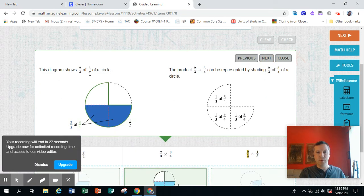This diagram shows 2 thirds of 3 fourths of a circle. 3 fourths is green. 2 thirds is shaded blue.